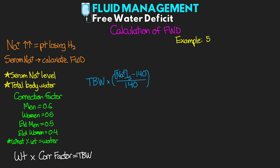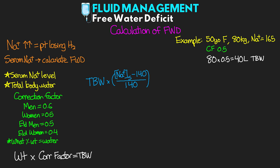Let's say that we have a 50-year-old female patient who weighs 80 kilograms and has a serum sodium of 165. So she's obviously pretty hypernatremic. First we need to calculate the total body water. We know that she's a female at 50 years — I would not say that she's elderly — so we're going to use a correction factor of 0.5. So we take her weight: 80 times 0.5, which equals 40. This means that our patient's total body water is 40 liters. Now we know that their sodium concentration is 165 millimoles per liter.